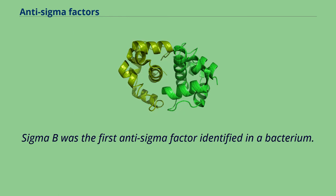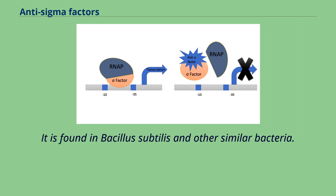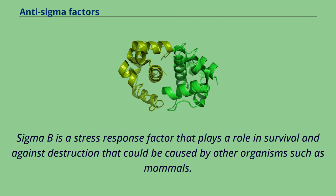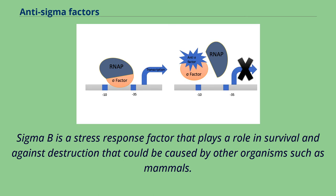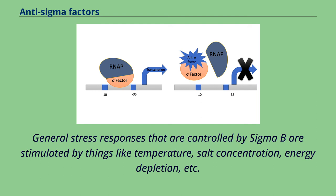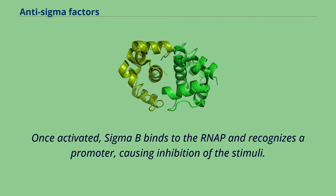Sigma B was the first anti-sigma factor identified in a bacterium. It is found in Bacillus subtilis and other similar bacteria. Sigma B is a stress response factor that plays a role in survival against destruction that could be caused by other organisms such as mammals. General stress responses controlled by Sigma B are stimulated by things like temperature, salt concentration, and energy depletion. Once activated, Sigma B binds to the RNAP and recognizes a promoter, causing inhibition of the stimuli.